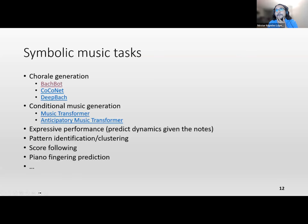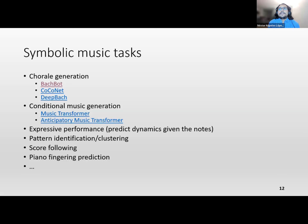The last thing before going into my own research: a few symbolic music tasks. There was a time — and you still see papers about it — on chorale generation. People like to use Bach chorales because there are 370 of them, they're super well delimited, have between 12 and 20 measures, all have four voices, and about the same range in each voice. That's why we've seen things like BachBot, Coconet, and DeepBach over the years.